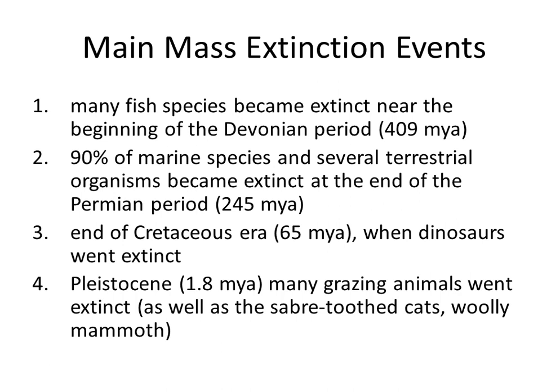Mass extinction events. Many fish species became extinct near the beginning of the Devonian period, 409 million years ago. 90% of marine species and several terrestrial organisms became extinct at the end of the Permian period, 245 million years ago. The end of the Cretaceous era, 65 million years ago, when dinosaurs went extinct. And the Pleistocene, 1.8 million years ago, when many grazing animals went extinct, such as the saber-toothed cats and woolly mammoth.